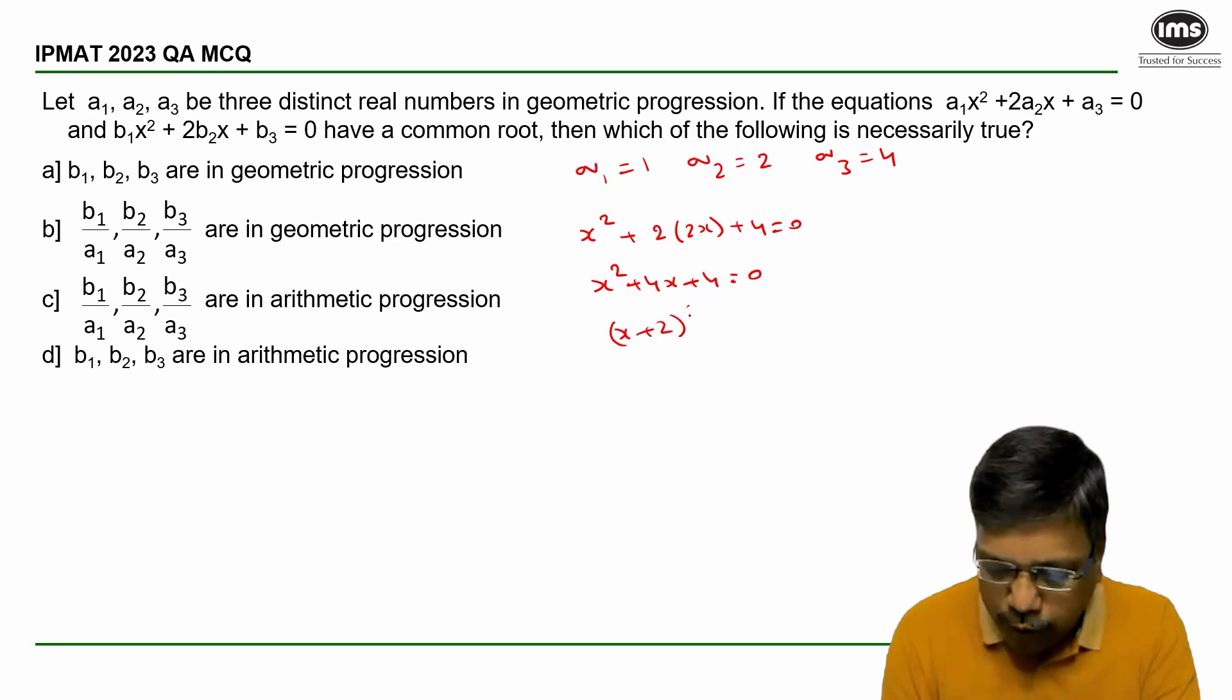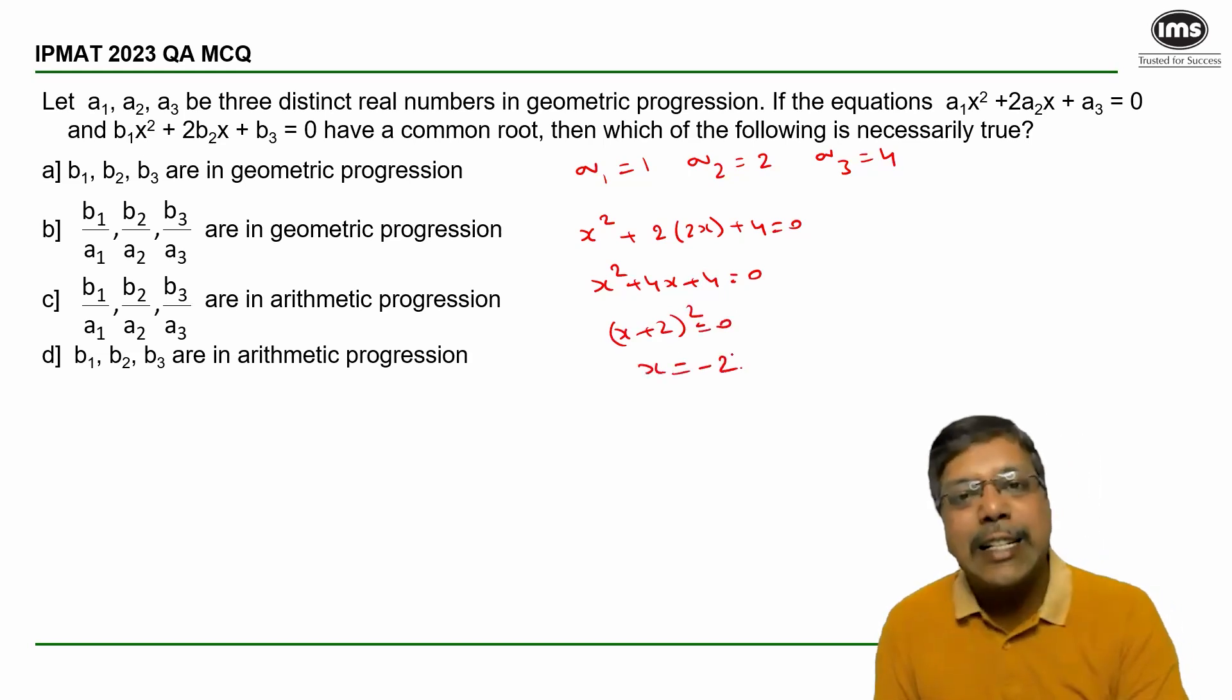(x + 2)² = 0, which gives the value of x as -2.